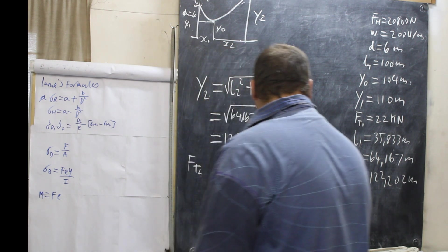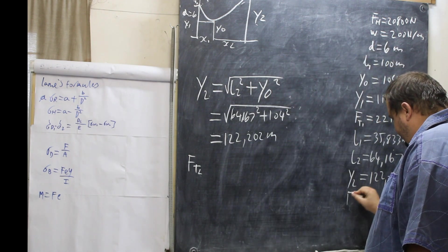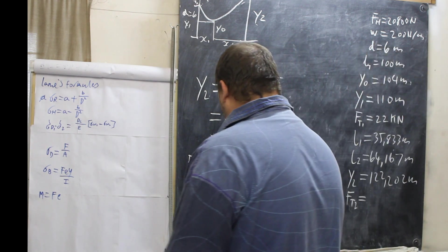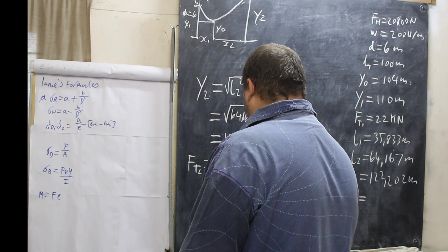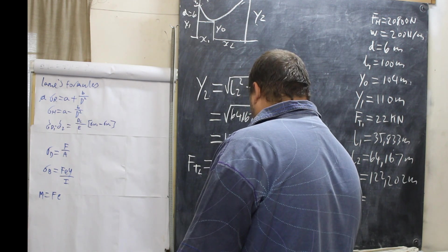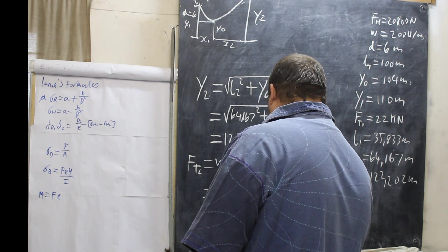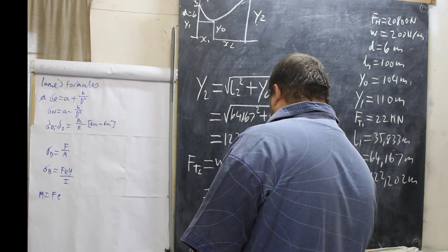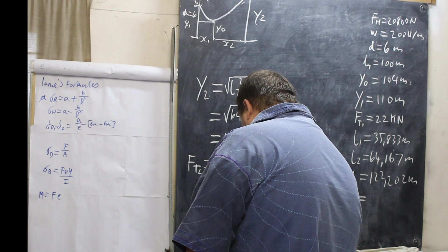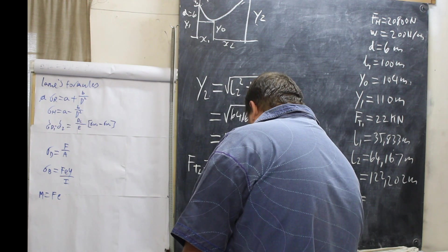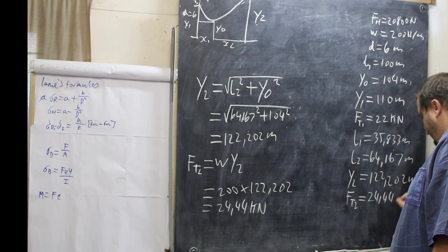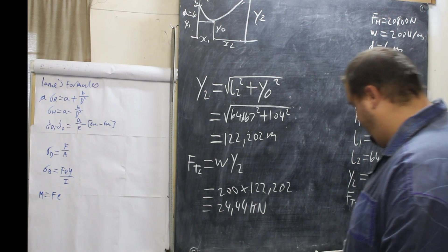Now that we have Y2, we've got Y1 and Y2. So now what we need is FT2. So FT2, this will equal W times Y2. So 200 times 122.202 and that equals 24.44 kilonewtons.